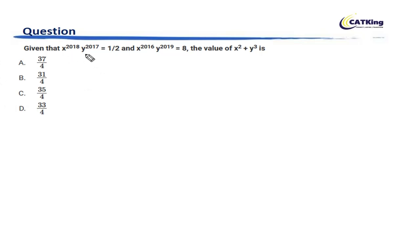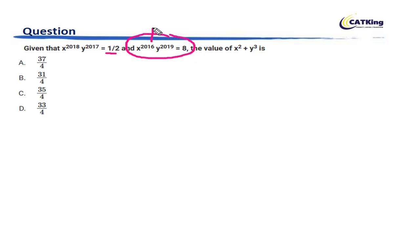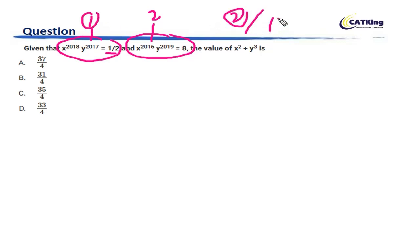X to the power 2018 and Y to the power 2017 is equal to half. X to the power 2016 and Y to the power 2019 is equal to 8. Now if I divide — let's call this equation 2 and this equation 1 — let us divide equation 2 by equation 1.